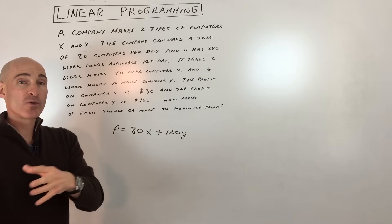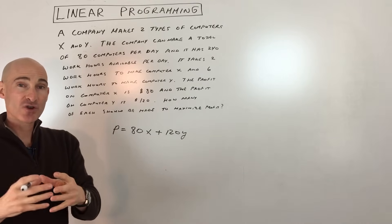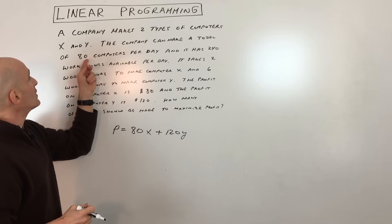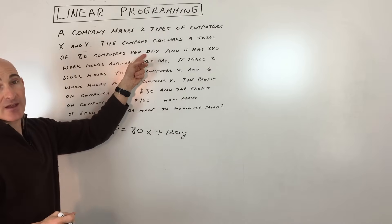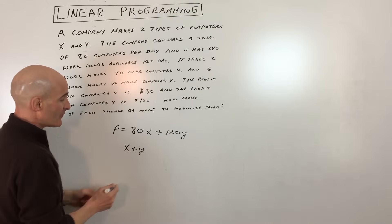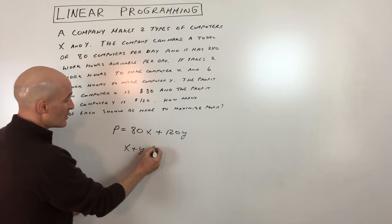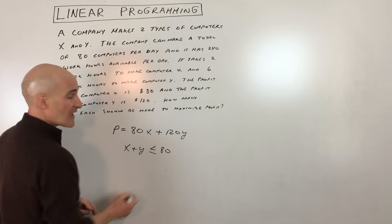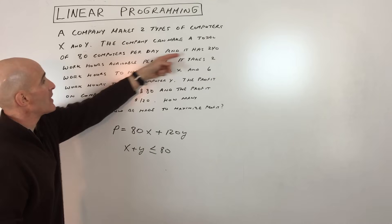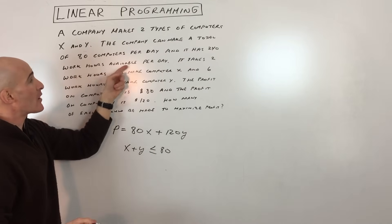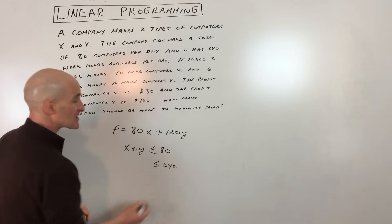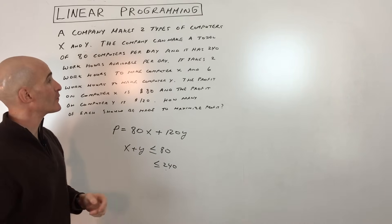Now we want to work with the constraints — the restrictions. It says you can only make a total of 80 computers per day. So X plus Y has to be less than or equal to 80. The company also only has 240 work hours available, so the total work hours have to be less than or equal to 240.